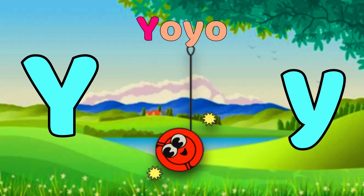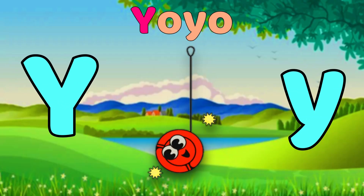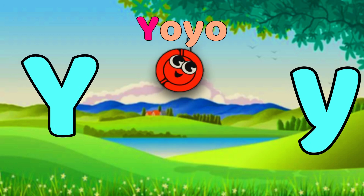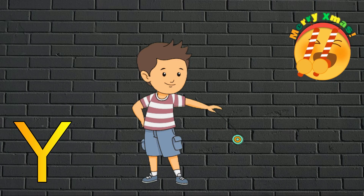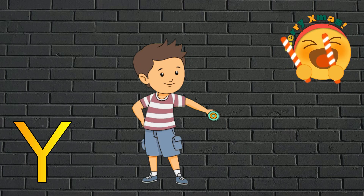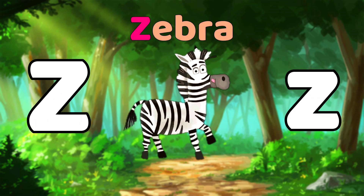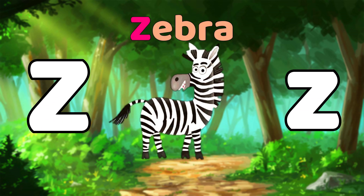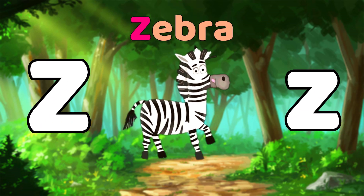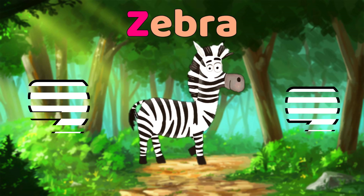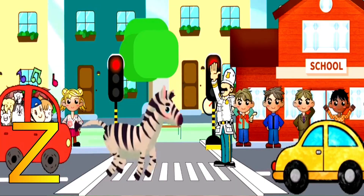Y is for Yo-yo. Y-y-yo-yo, Y-y-yo-yo. Z is for Zebra. Z-z-z-zebra, Z-z-zebra, Z-z-zebra.